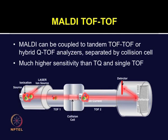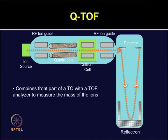MALDI-TOF-TOF is one of the widely used tandem MS configurations. In this, two time of flight tubes as well as hybrid quadrupole time of flight analyzers can be used. The MALDI-TOF-TOF system was discussed in more detail in the previous lecture. Moving on to the Q-TOF configuration — the Q-TOF combines the front part with a quadrupole, or it can be a triple quad (TQ), along with TOF analyzers to measure the mass of ions.